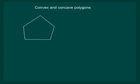To understand convex and concave polygons, let us look at this pentagon. We know that the area covered within the sides of this pentagon is called the interior of the pentagon.